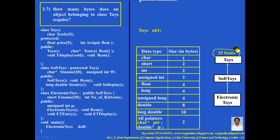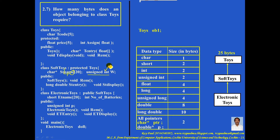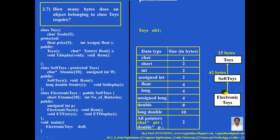Now let me calculate the size of the class SoftToys. Between the data type and the variable name, a star comes, meaning these are pointer variables. For a pointer variable, the size is always 2 bytes. There are 20 pointer variables, so 20 into 2 equals 40. Then there is 1 unsigned integer — all integers are 2 bytes. The remaining ones are functions. So for the class SoftToys, the size is 40 plus 2, which is 42 bytes.